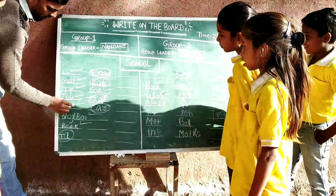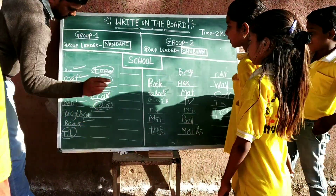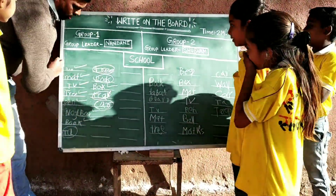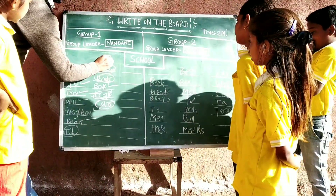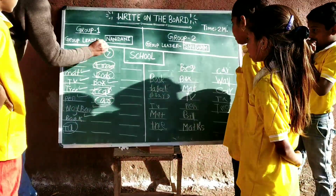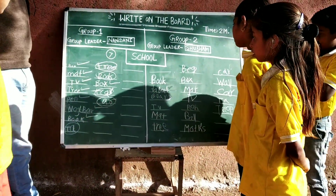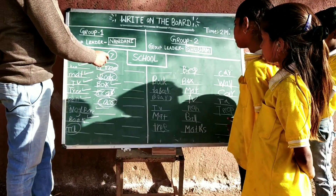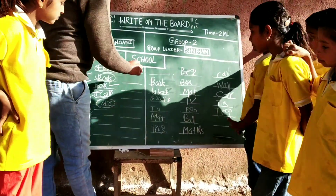Now I count only the correct words: 1, 2, 3, 4, 5, 6, 7. How many words? Right — 7. Group 1 data: 7.